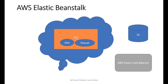Without Elastic Beanstalk, we need to first create an EC2 instance, install Java and Tomcat on it, create a bucket in S3 to store the JAR or WAR file, and configure the AWS Elastic Load Balancer manually. If we don't use Elastic Beanstalk, we need to do all these steps ourselves.